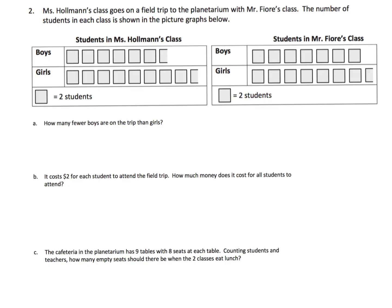We need to notice that each block represents two students. How many fewer boys are on the trip than girls? Let's count the boys. For Holliman's class: 2, 4, 6, 8, 10, 12, and that's a half a box so that's only one kid — 13 boys. And for Fiore's class: 2, 4, 6, 8, 10, 12, 14 boys. So we have 27 boys total.